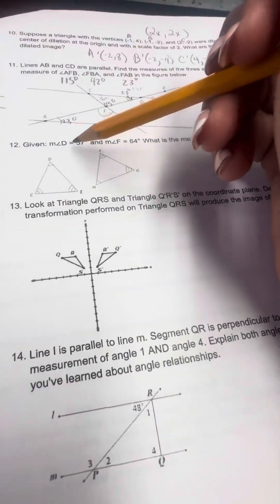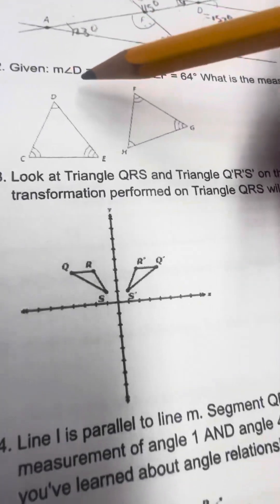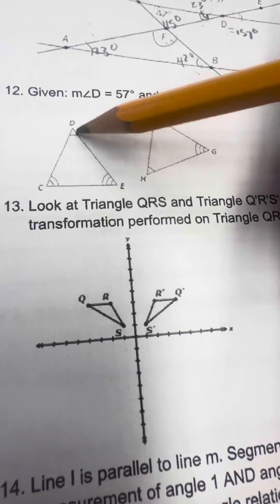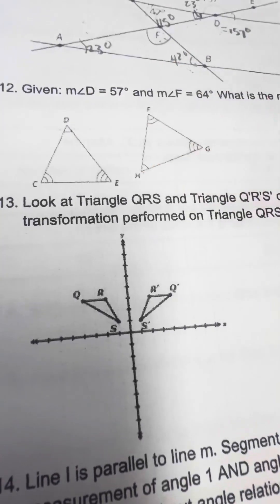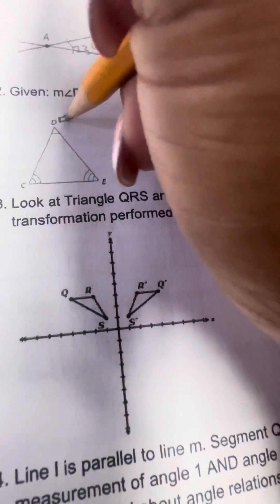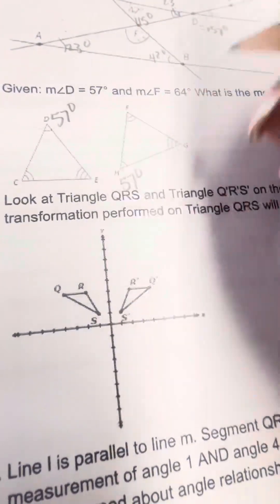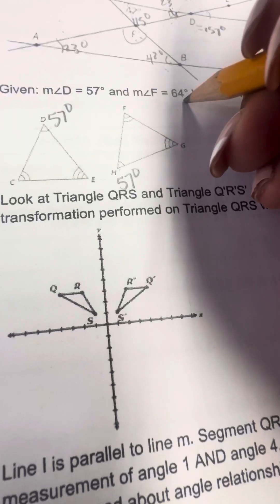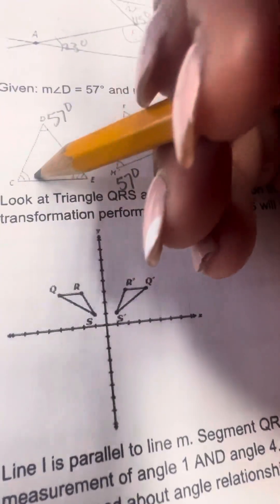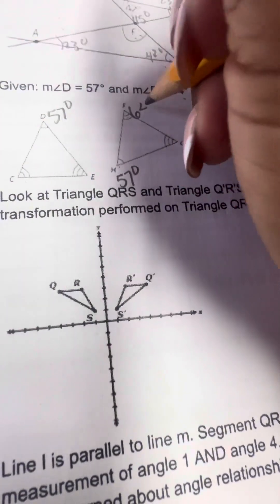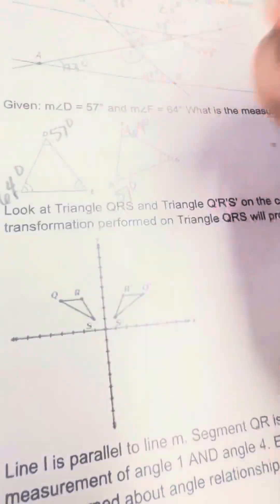Number 12, given these two measures, what's the measure of angle G? Here, you got to look closely. I know that D and H are the same because they both have the same similarity symbol. So if D is 57 degrees, this H angle must be 57 degrees. F is 64 degrees. It has one, two lines. C has one, two lines. So both of those must be congruent.